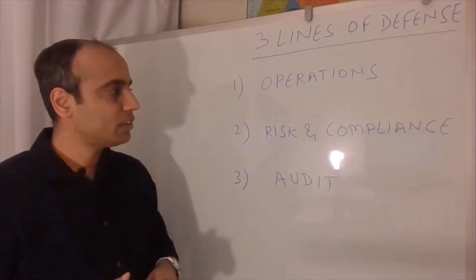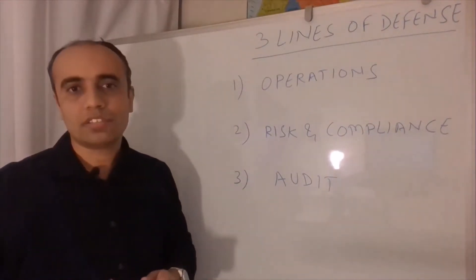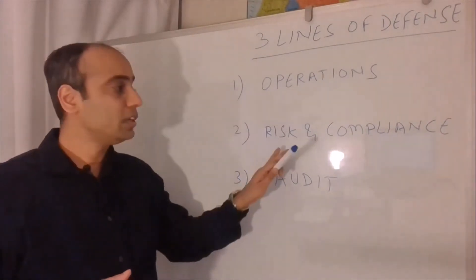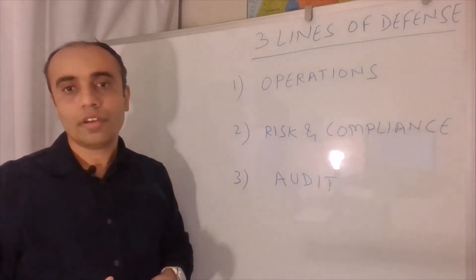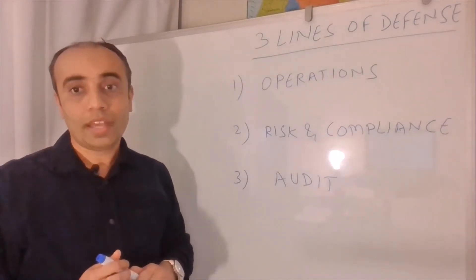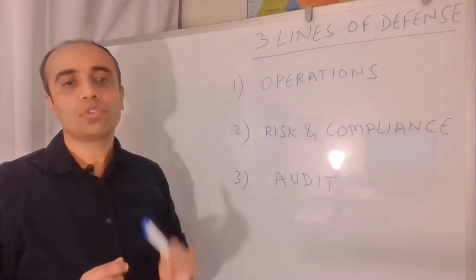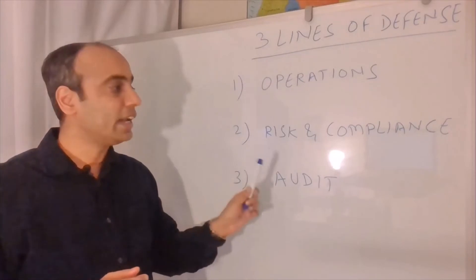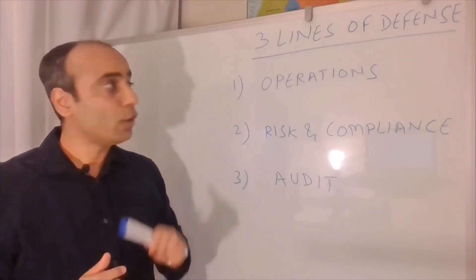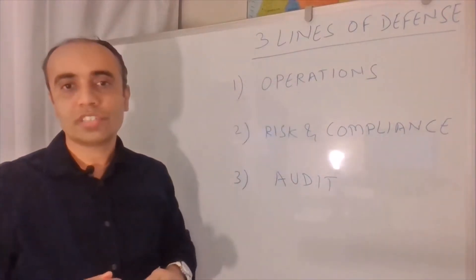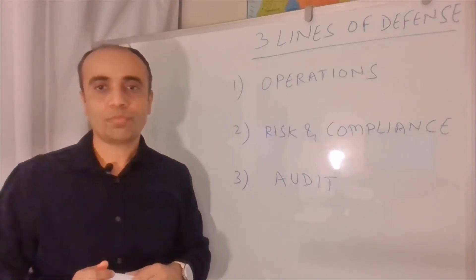Second line of defense is the risk and compliance team. Their job is to identify risk in different areas across the company and draft the procedures and guidance to mitigate these risks. And also ensure operations team, they are following these procedures and guidance.